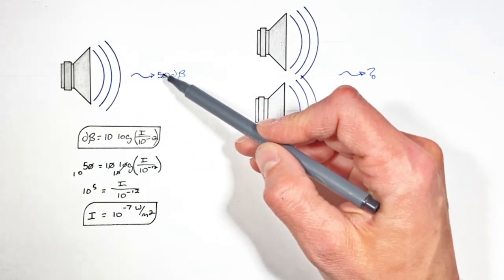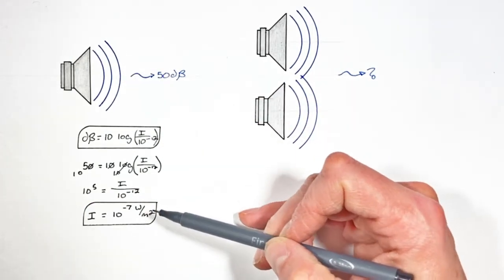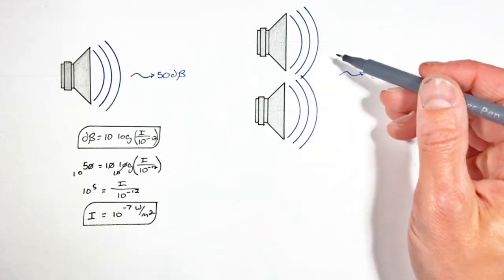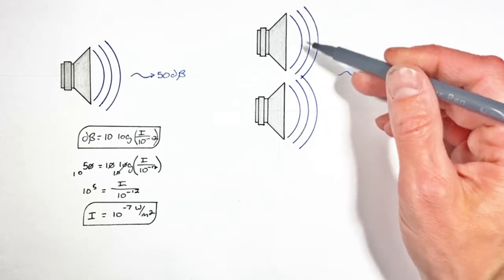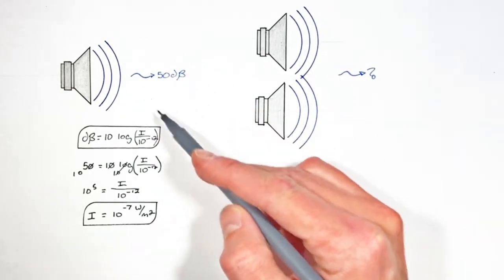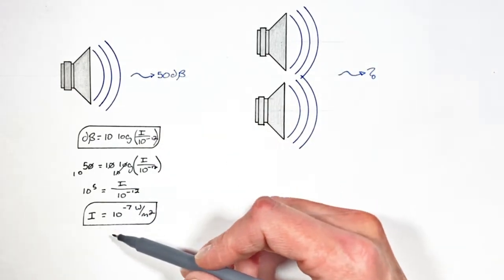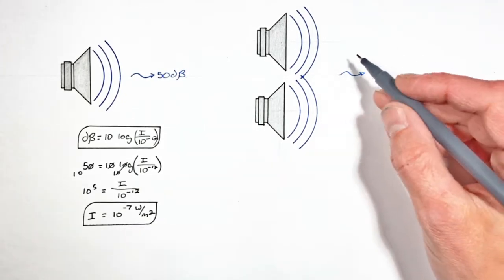Now, the important physics concept to understand and recognize in this problem is that when we double the number of speakers, we don't double the decibel level. What we actually do is double the intensity of sound which is going to be heard at some distance away.